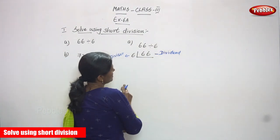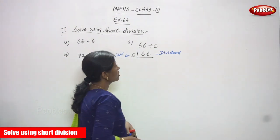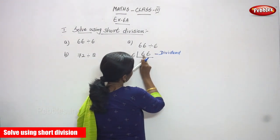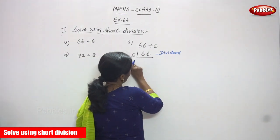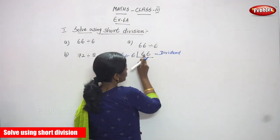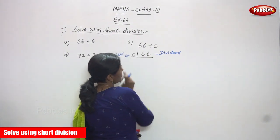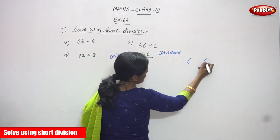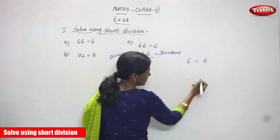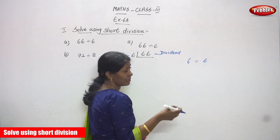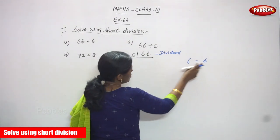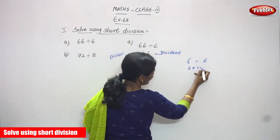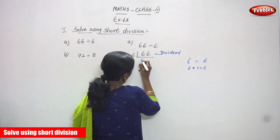You must use the 6 times table up to 66. First, you must take 6 — these are the 1's and 10's. Take 6 tens and divide by 6. Compare 6 and 6 — both are equal, not less than or greater than. 6 divided by 6 gives 1, so the first quotient digit is 1.